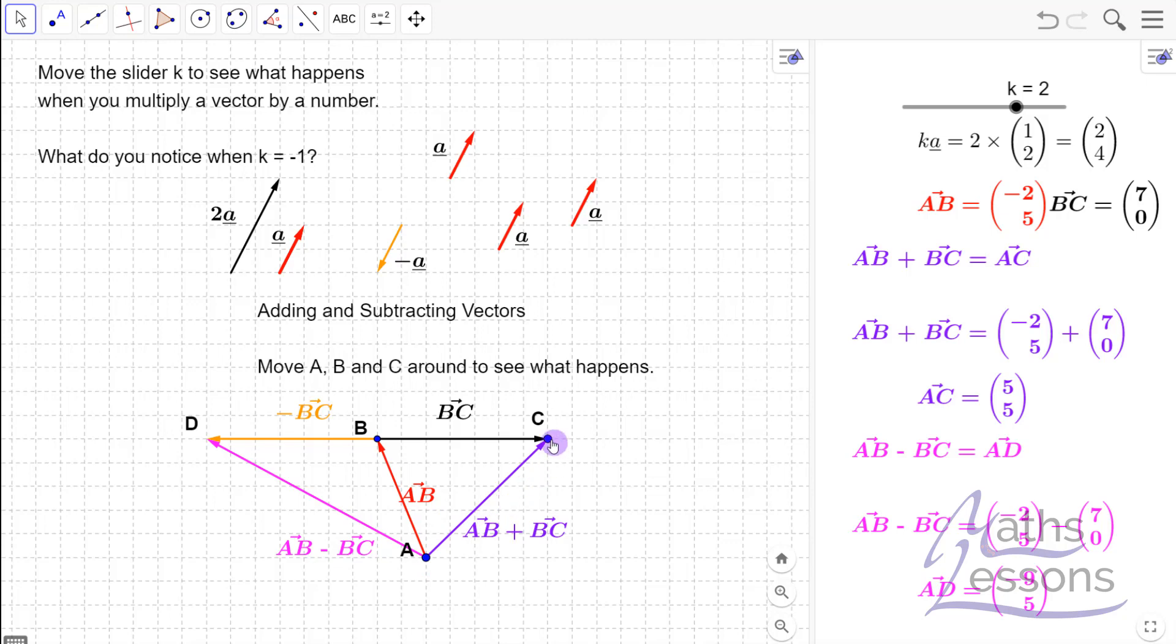And what you can see is if we just change BC, so BC is now a bigger vector, we can see—so we've added on an extra 2 to the y—then you can see that AC changes accordingly. And similarly if we were to change AB again...